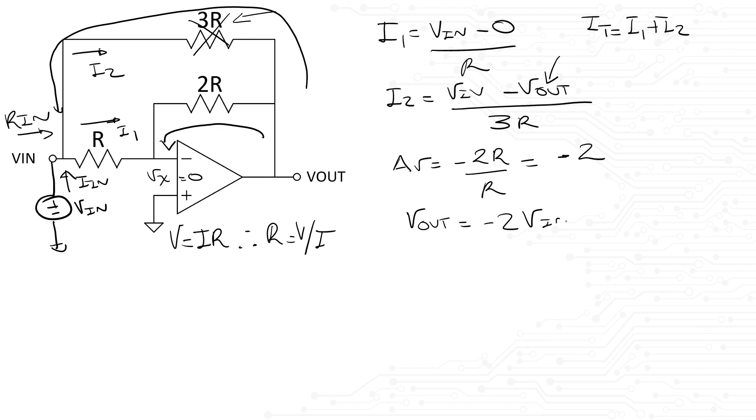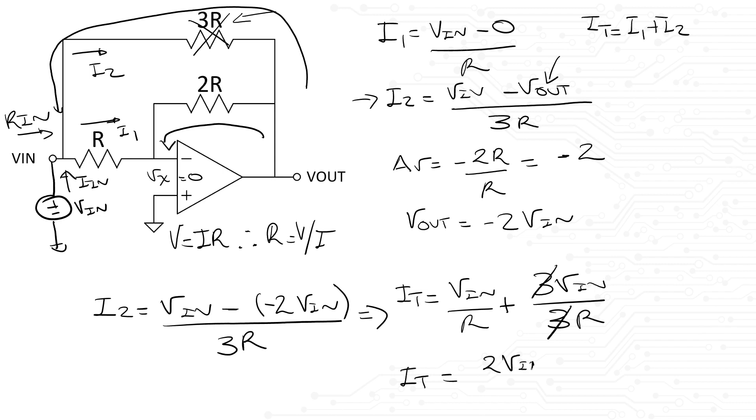If we replace that in our original equation for current I2, we have that Vin minus negative 2 times Vin divided by 3R is the current at that branch. So, I1 plus I2 equals Vin divided by R plus 3 times Vin divided by 3R. We cancel the 3's and we get that the current leaving the source is equal to Vin divided by R plus Vin divided by R or in other words 2 times Vin divided by R.